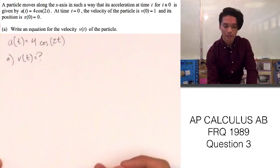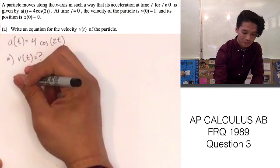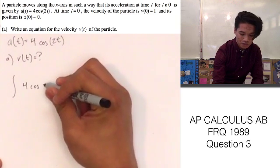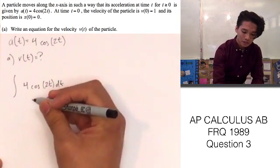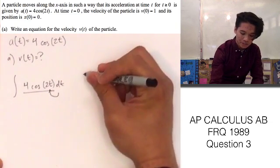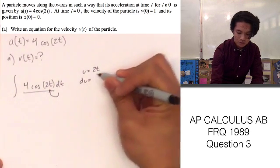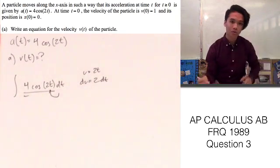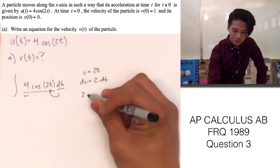Since we were given the acceleration, if we take the integral of the acceleration, we're given the first derivative which is the velocity. So we can go ahead and integrate our acceleration, which is 4cos(2t), with respect to t. Here we can use u-substitution. We know that u is going to be inside the parentheses, which is 2t, and du is 2 with respect to t. We can see that what's left is 4 dt instead of 2 dt.